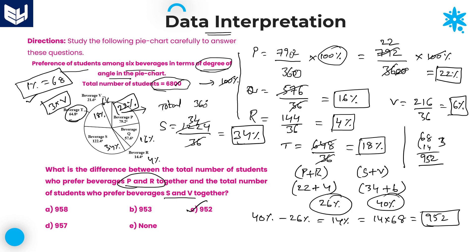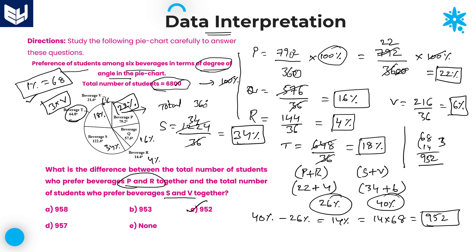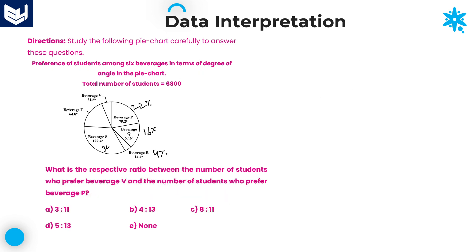We need to remember each and every percentage: P = 22, Q = 16, R = 4, S = 34, T = 18, V = 6. According to that, we can calculate questions one by one. The next question: what is the ratio between the number of students who prefer beverage V and the number of students who prefer beverage P?